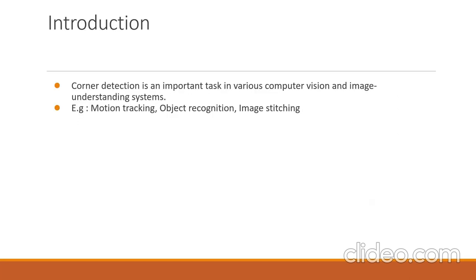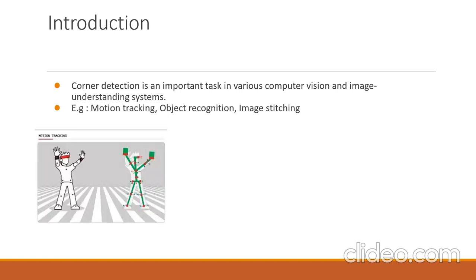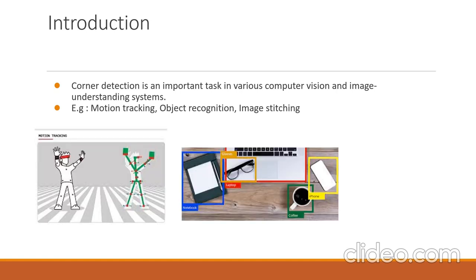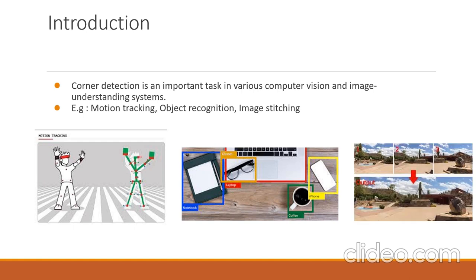Before going into the paper, everyone should understand what a corner point is and its importance. A corner point is a point that can be uniquely represented. Corner detection is very important because various computer vision and image understanding systems require corner points for implementation. Motion tracking, object recognition, and image stitching are the most commonly seen applications. With the advent of VR games, automated cars, robotics, and other fields, accurate motion tracking and image recognition have become even more important.